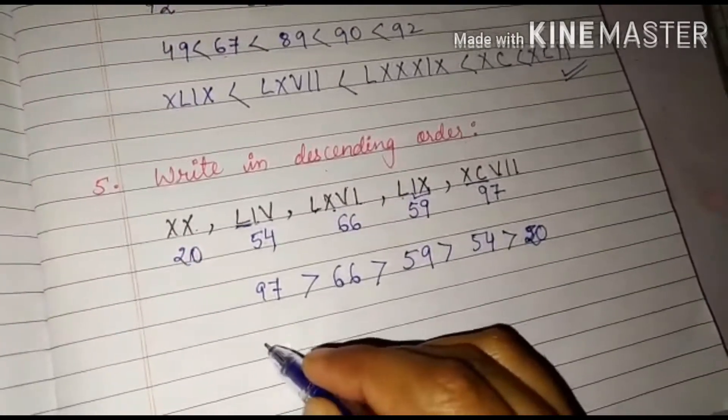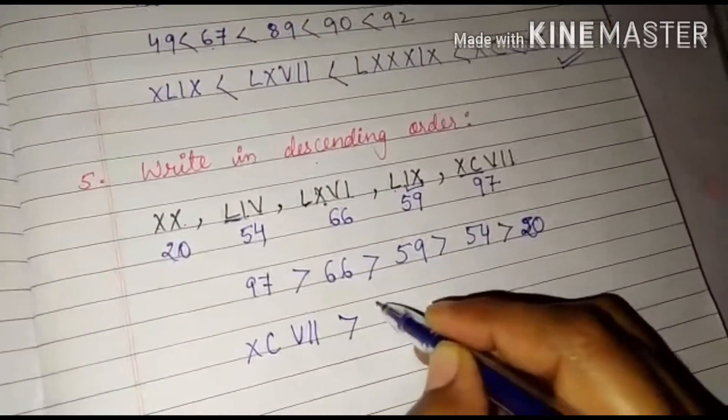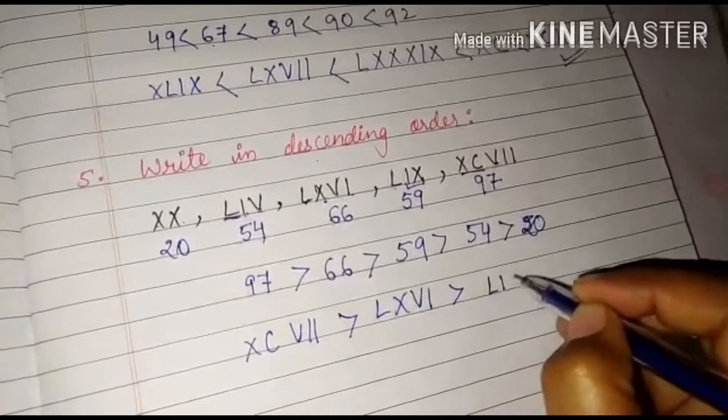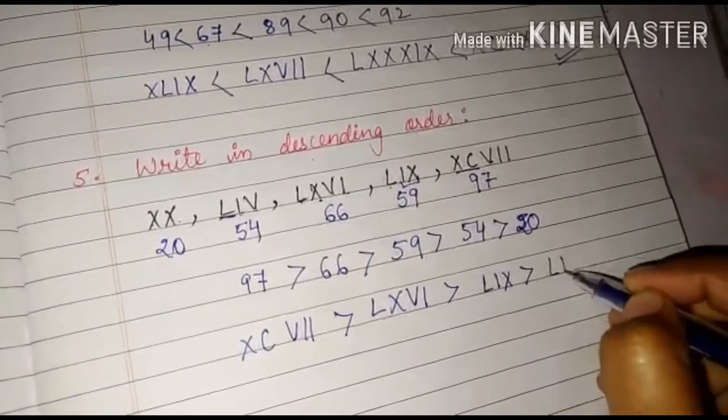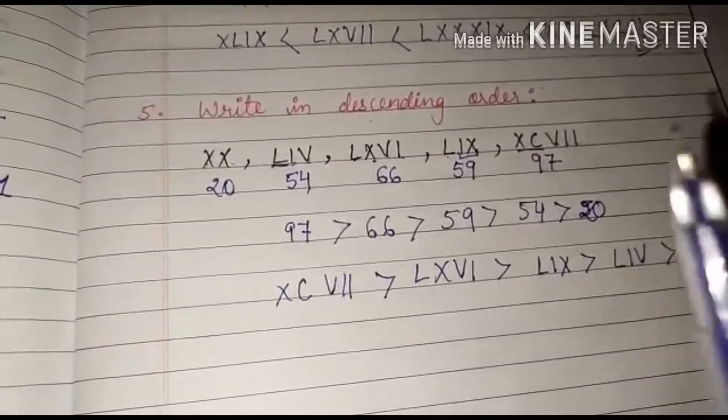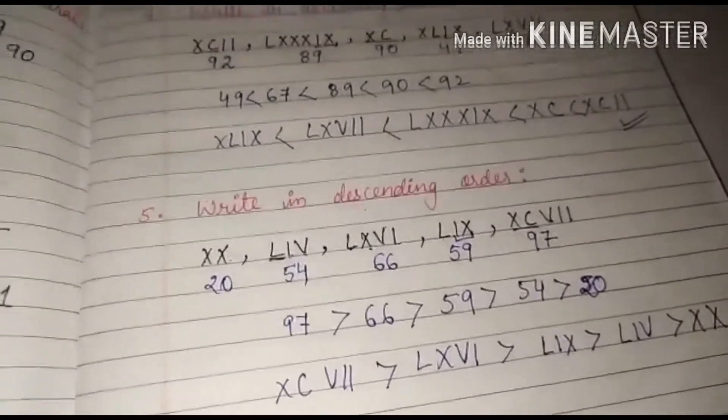Now 97 is our XCVII which is greater than LXVI which is greater than LIX which is greater than LIV and that is greater than XX. So in this manner we will be able to write in descending order or in ascending orders.